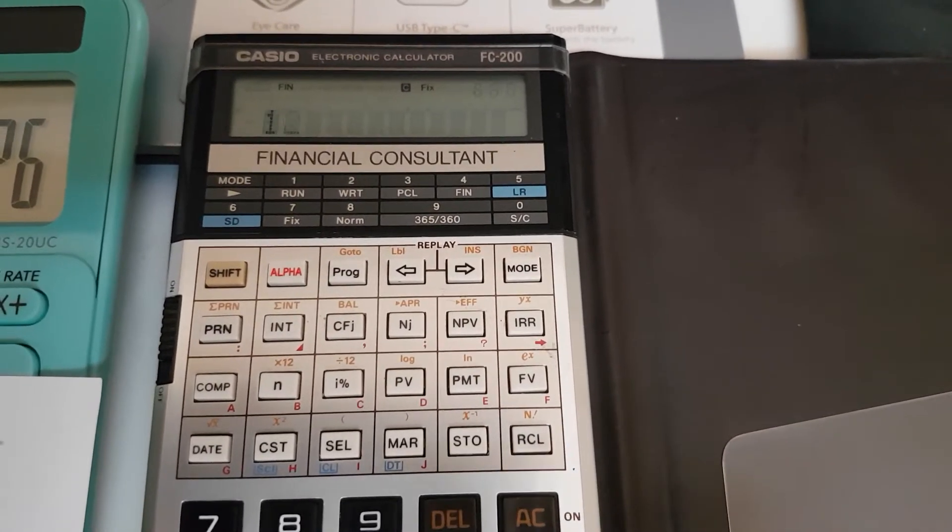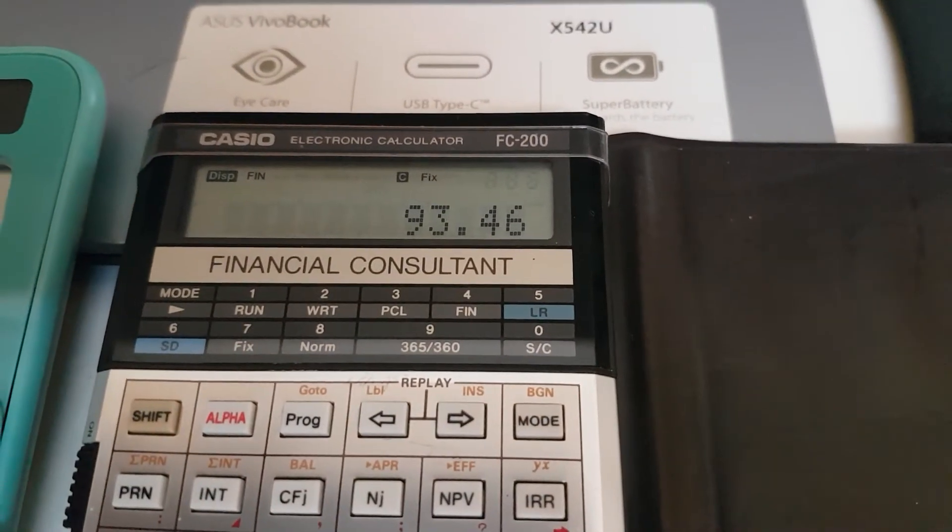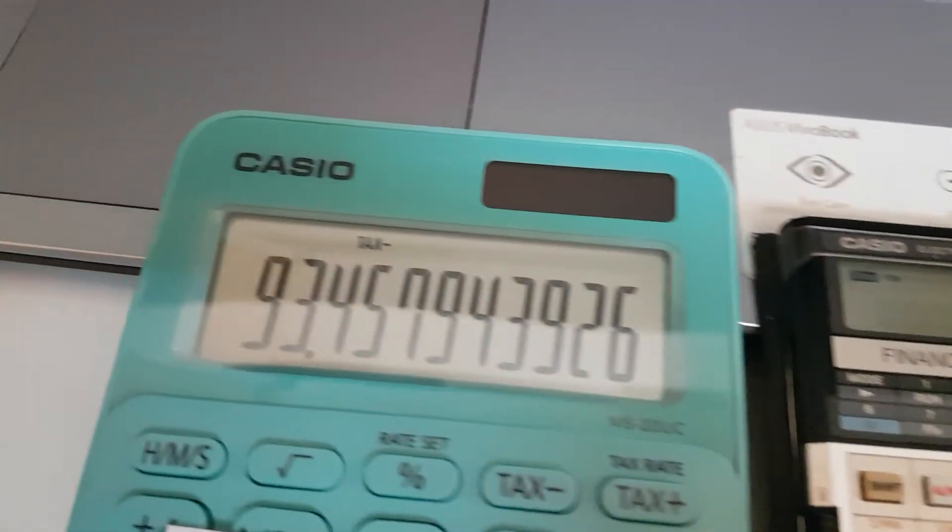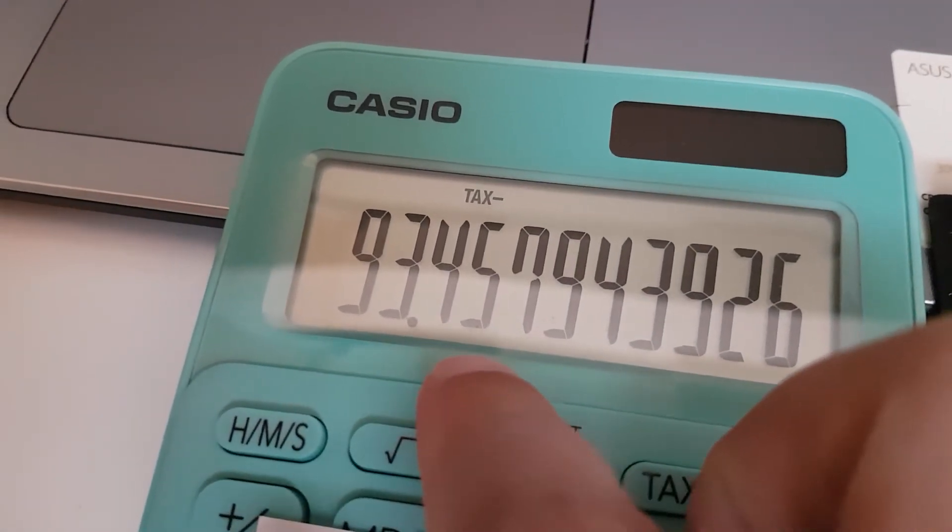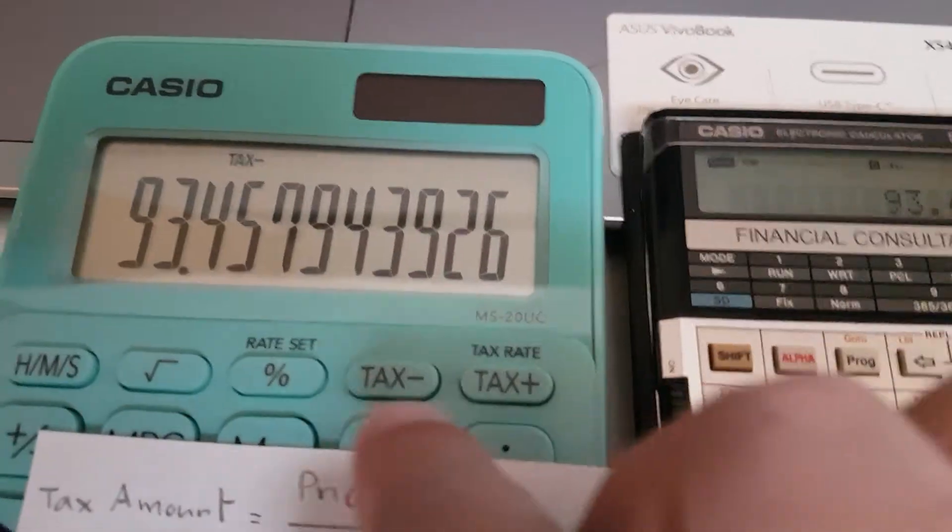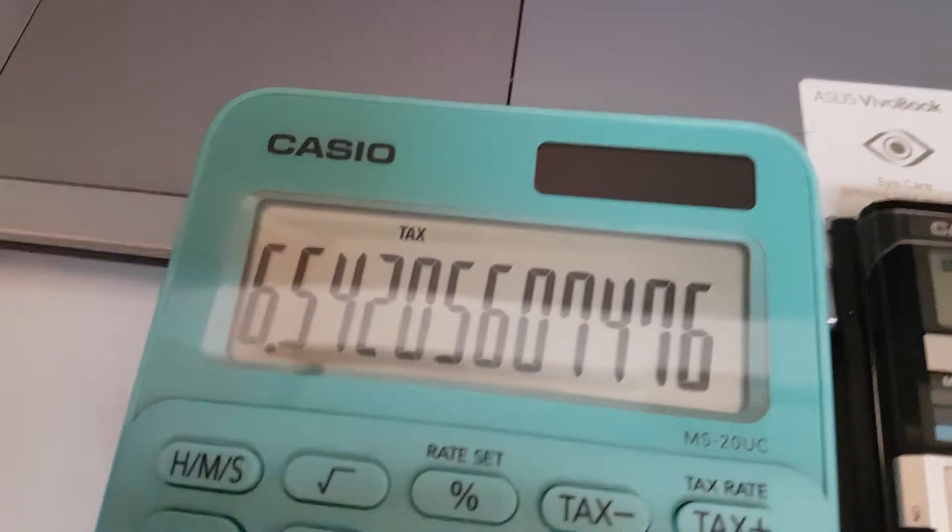So I put 100, and that should be 93.46. 93.46 rounded up, the 5 is going to be 46. And when you press tax minus again, that's the tax amount.